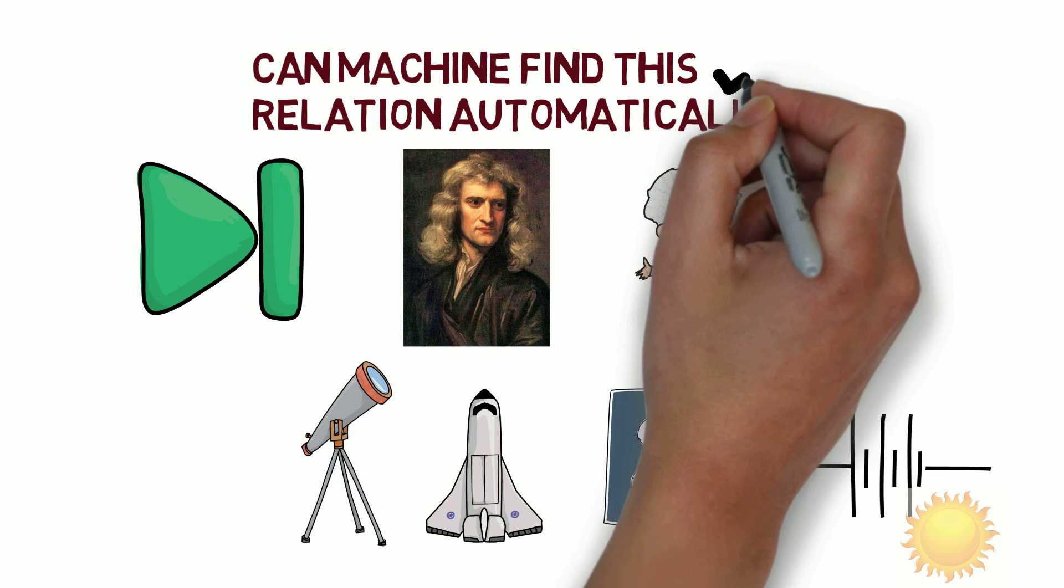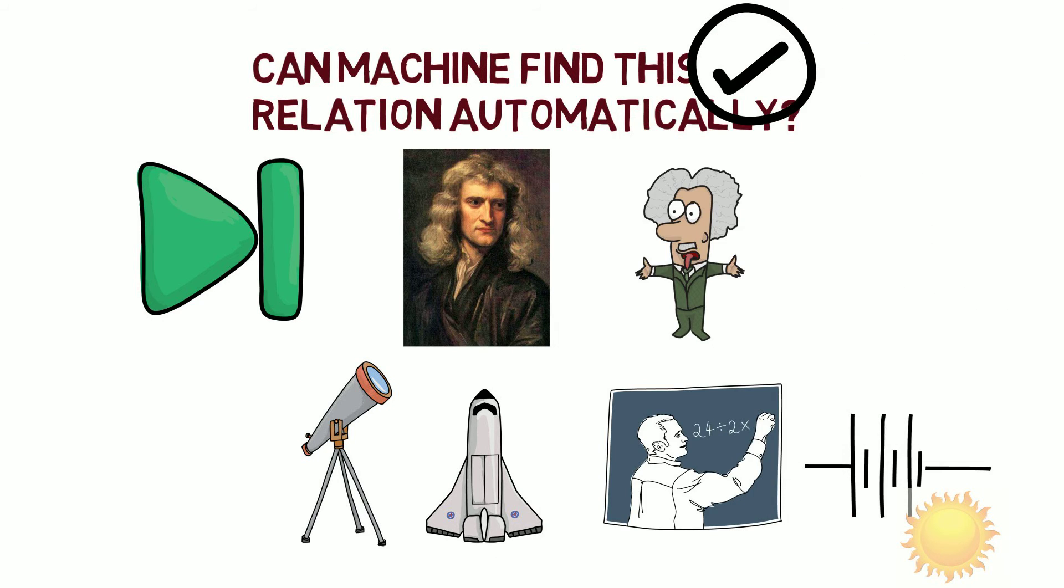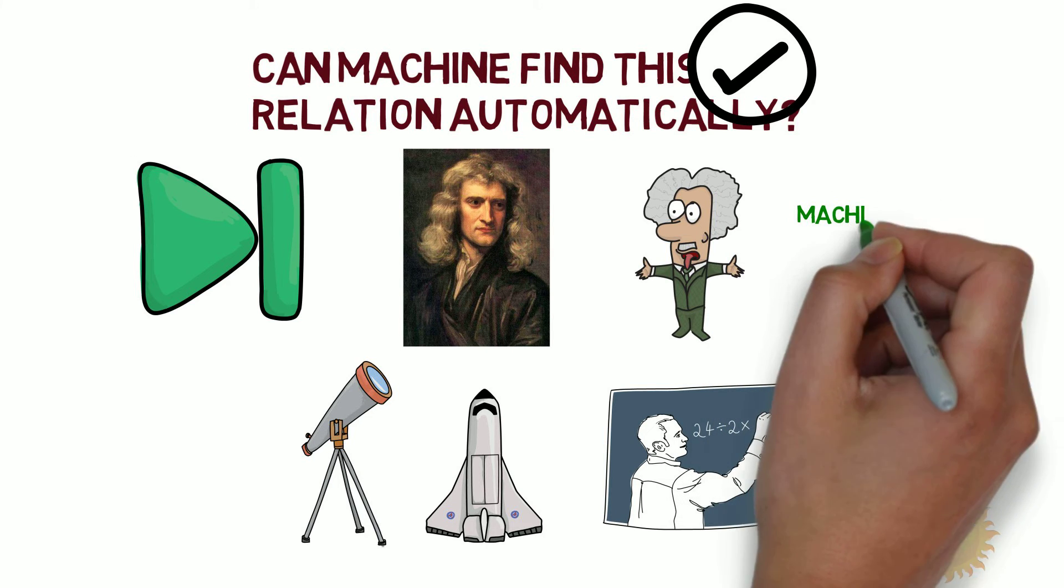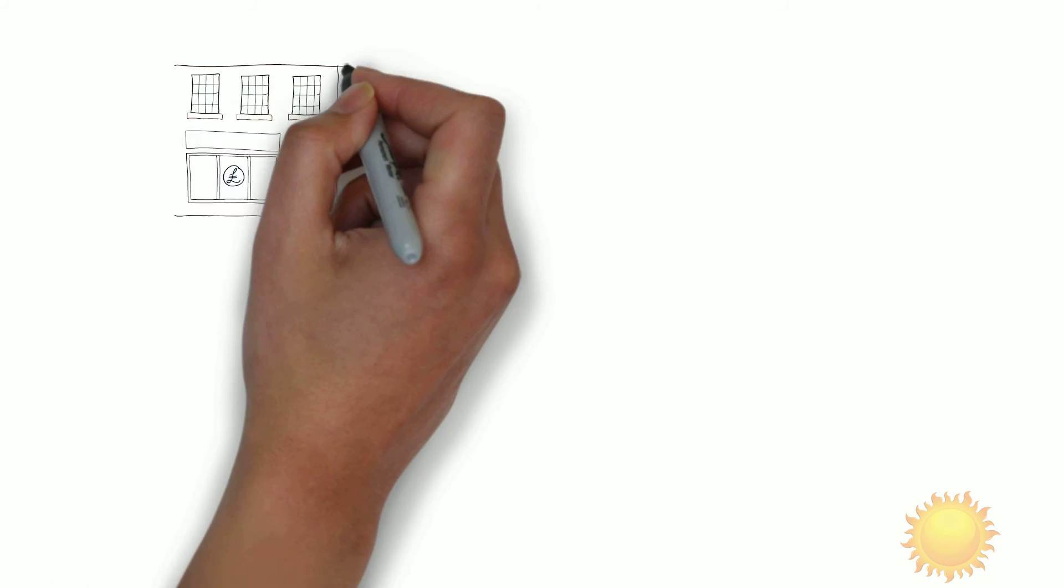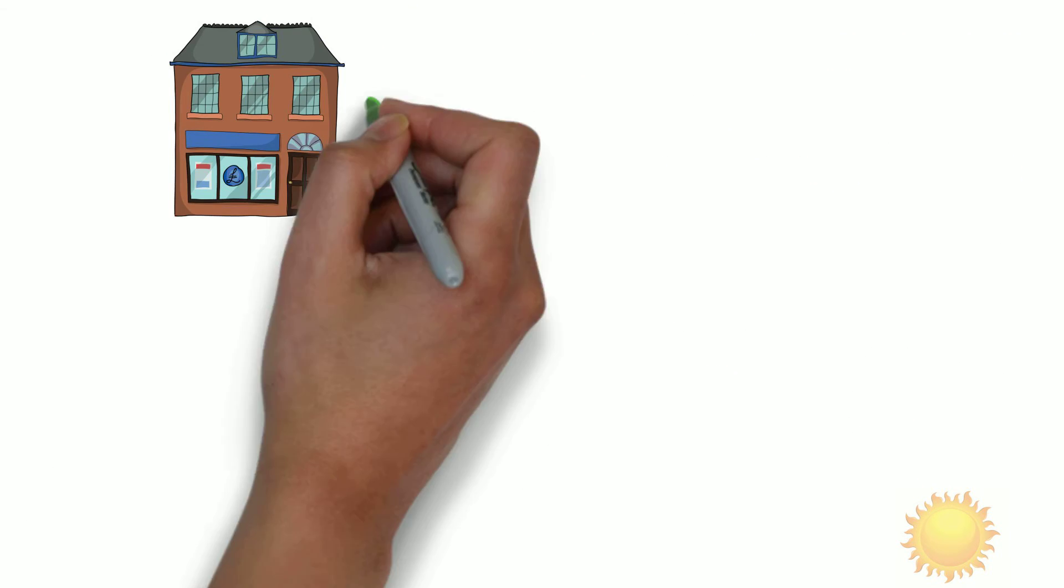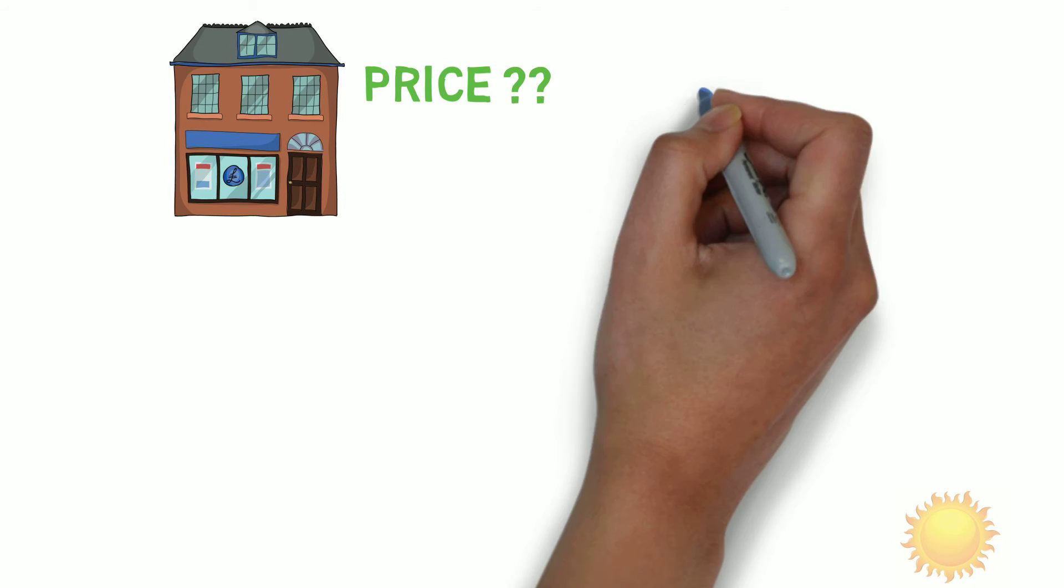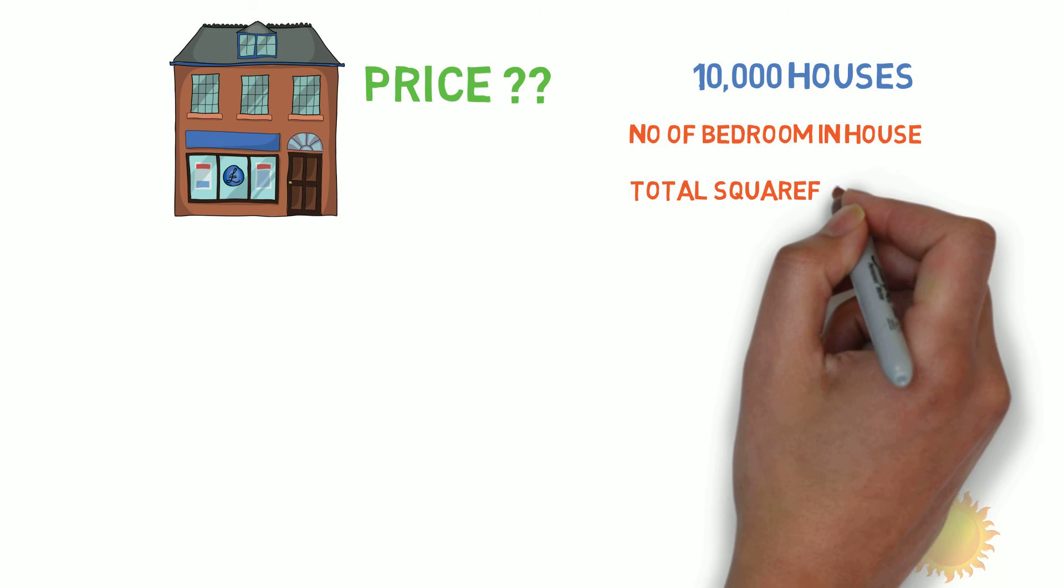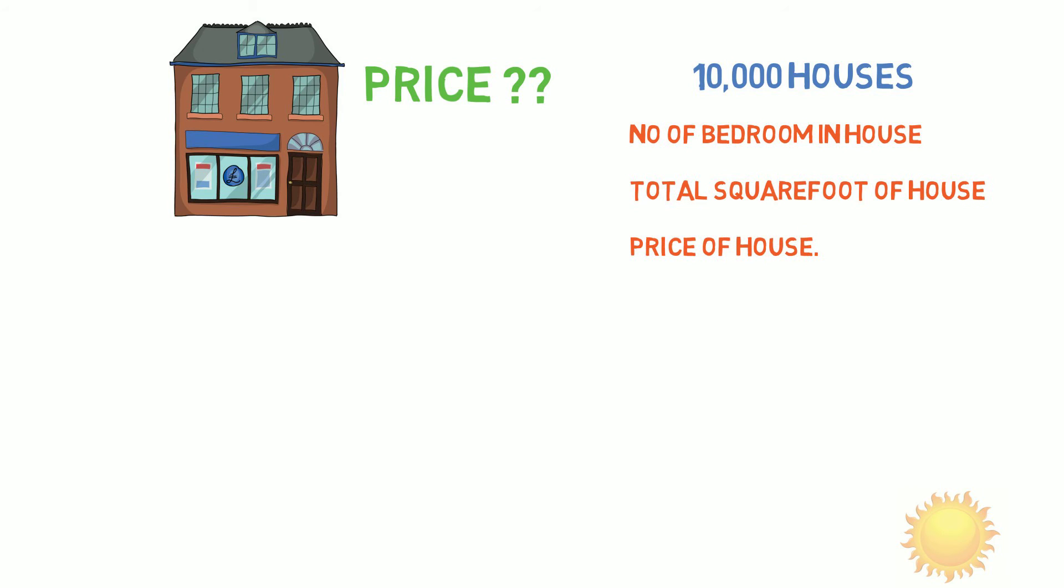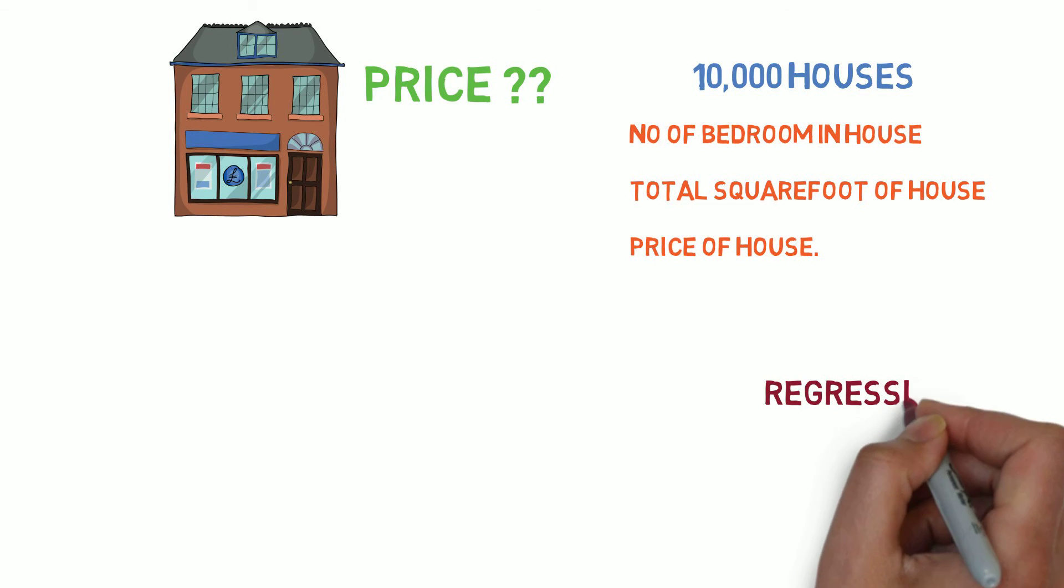The answer is yes, still at a small scale, but machines can find relationships between data, which is machine learning technology. Let's understand with one example. Say we want to find the price of a house in a town and we have data available for ten thousand different houses: number of bedrooms, total square footage of the house, and price of the individual house. Can a machine find the relationship between the data using machine learning algorithms? How much weight does each individual feature have on the price of the house? Yes, regression, one of the supervised machine learning techniques.